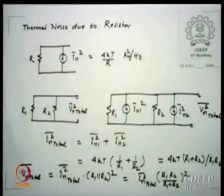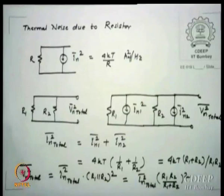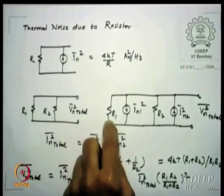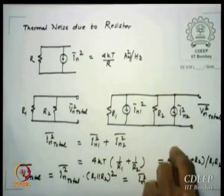To calculate thermal noise due to resistors: a typical resistor can be represented either as a current source noise or a voltage source noise. If represented as a current source, I_N² = 4kT/R amperes-squared per hertz. For two resistors, each is represented as a noiseless resistor shunted by its own current noise source, and another resistor with its own current noise source.